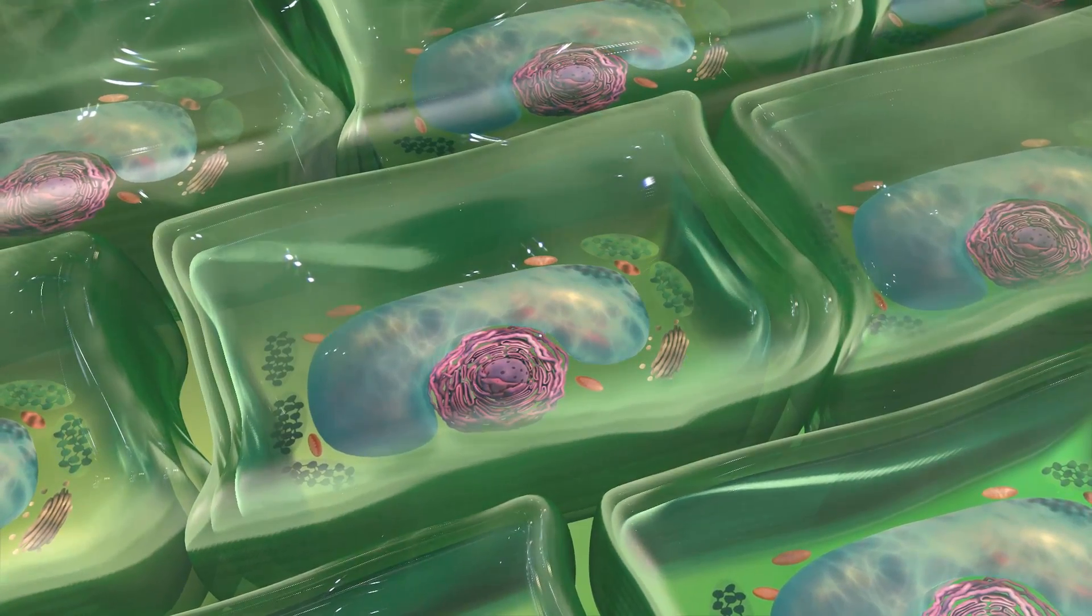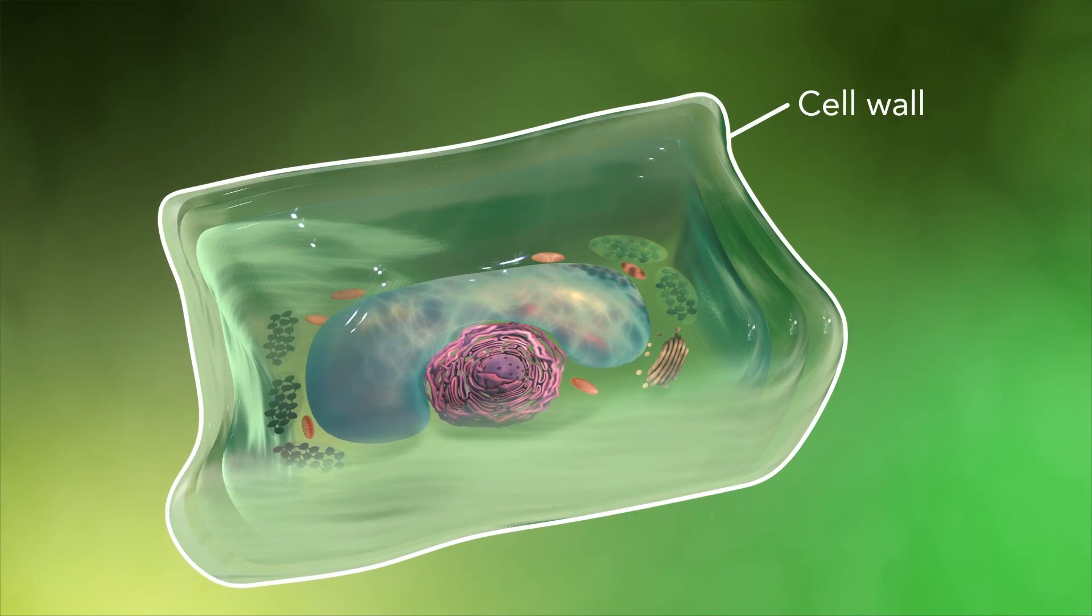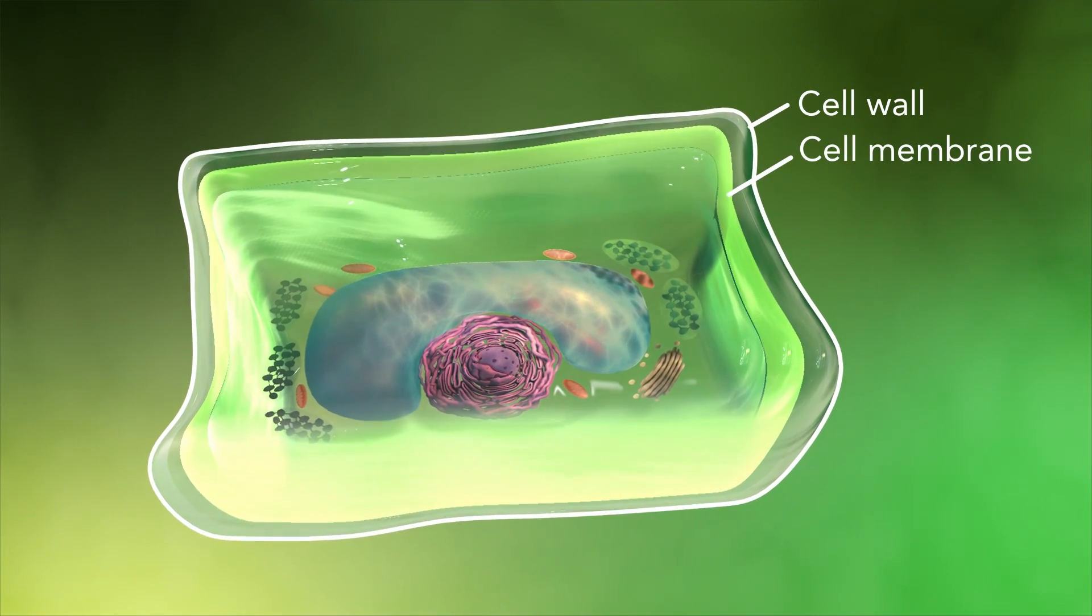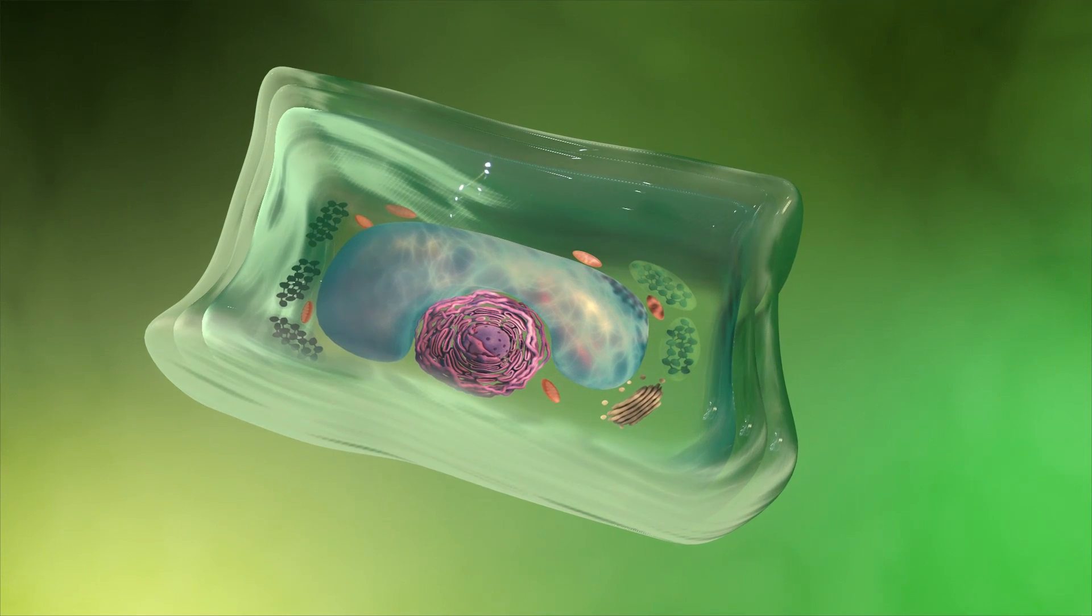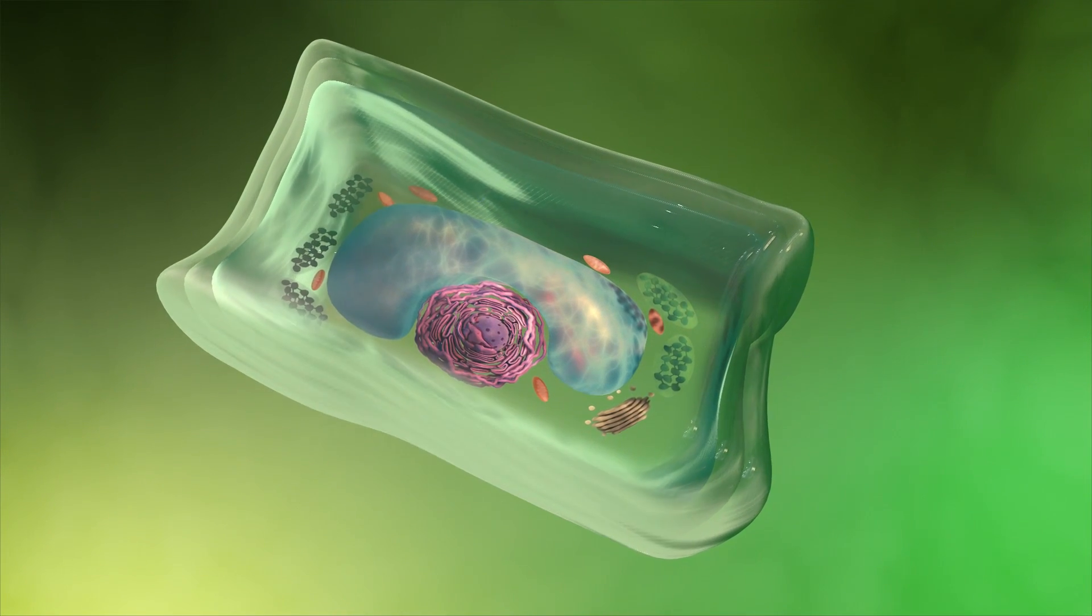Plant cells also have a cell wall outside of their cell membranes that shape, support, and protect the plant cell. Animal cells never have a cell wall.